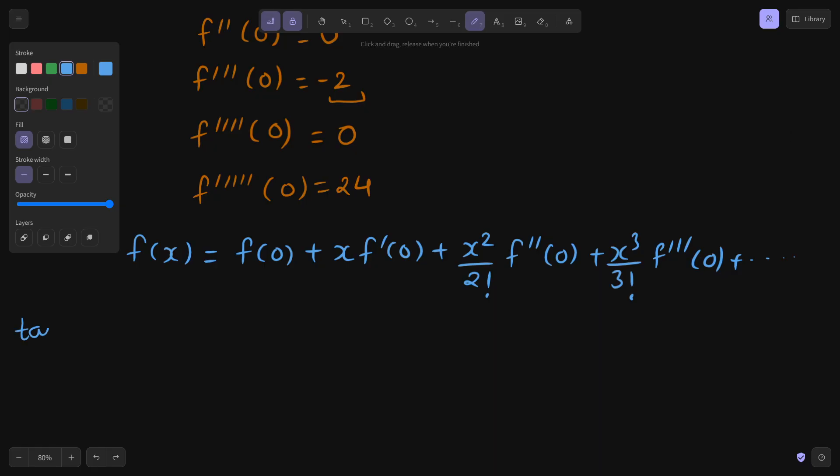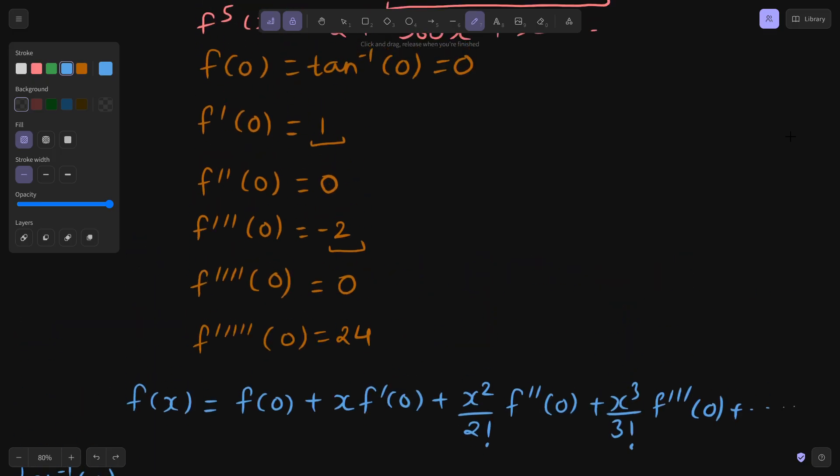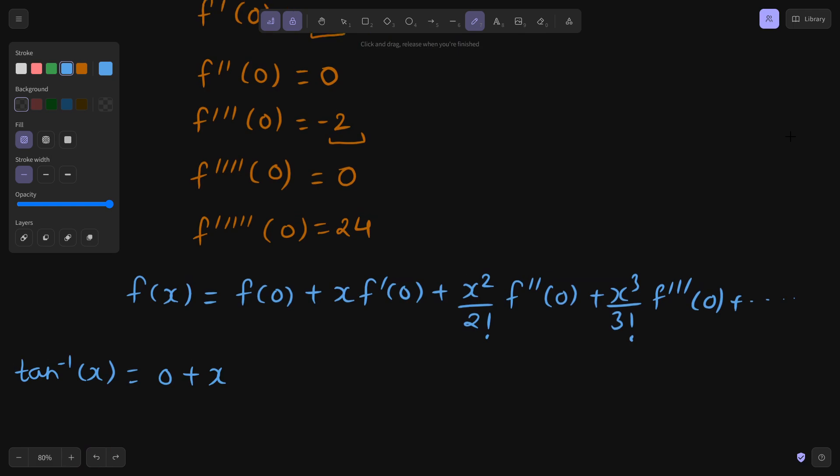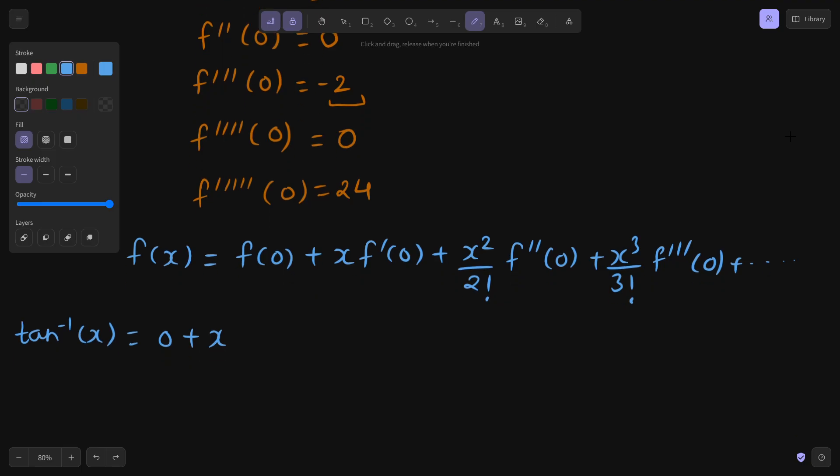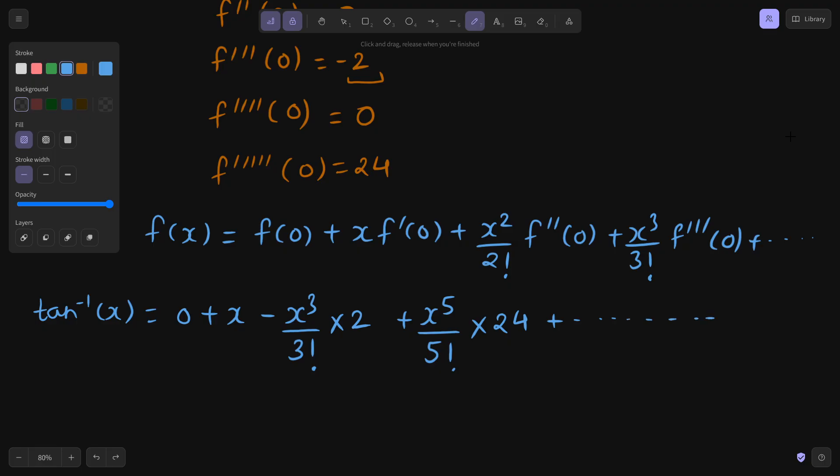f(x) is nothing but tan inverse x. f(0) I got I think 0 plus x times first derivative at 0 is 1 so that is 1 only. Second derivative is 0 so that term will vanish. Third derivative is -2 so I will get minus of x³ by 3 factorial times 2. Then what will come x power 4 by 4 factorial and I will get 4th derivative but that is again 0. So coming to the fifth derivative and that is positive. So x power 5 by 5 factorial and that is multiplied by f fifth derivative at 0 which is 24 and this will go on and on. I am not concerned about the sign that will be managed next.